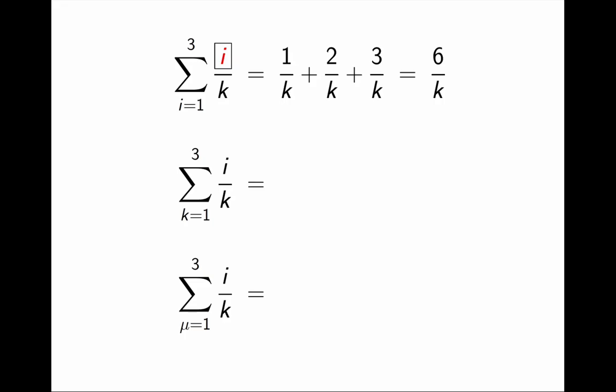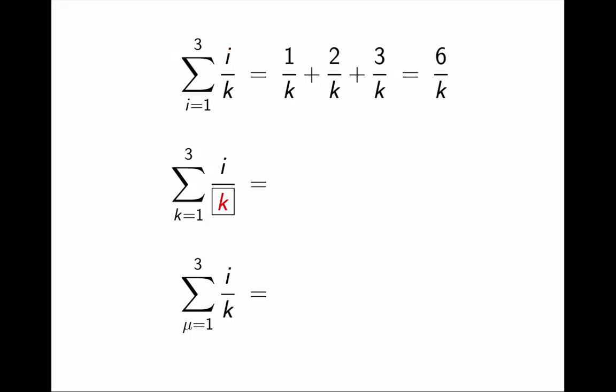By contrast, in the second sum, the summation index is k. k is what changes from term to term. For the purpose of the sum, i is just a constant. So the sum is i over 1, plus i over 2, plus i over 3, which comes out to be 11 times i over 6.